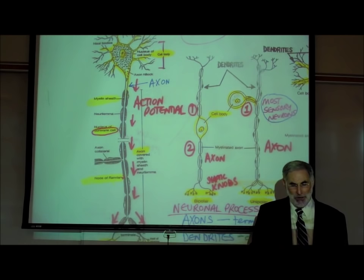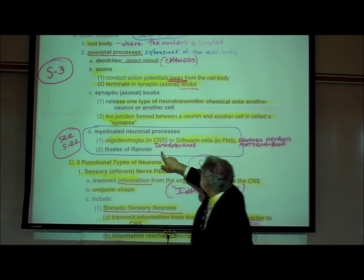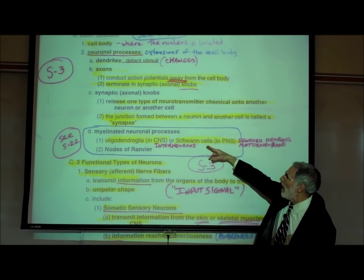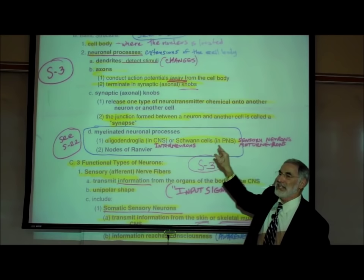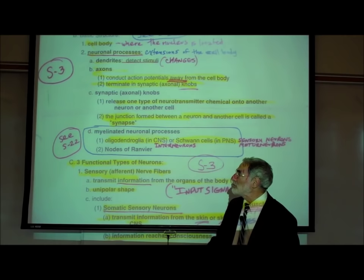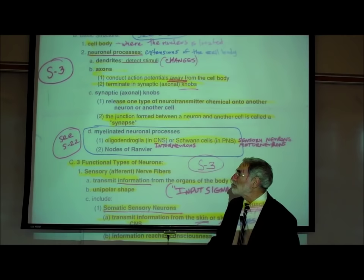Summarized on page S3: oligodendroglial myelinating cells are wrapped around interneurons in the central nervous system, whereas Schwann myelinating cells are wrapped around the sensory neurons and motor neurons in the peripheral nervous system. The spaces between these myelinating cells are called nodes of Ranvier. The shape, appearance, and function of these myelinating cells are essentially the same whether we're talking about oligodendroglia or Schwann cells.